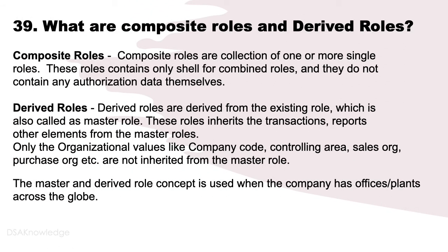What are composite roles and derived roles? Composite roles are a collection of one or more single roles. These roles contain only a shell for combined roles and do not contain any authorization data themselves. Derived roles are derived from an existing role, also called the master role. These roles inherit the transactions, reports, and other elements from the master role, but organizational values like company code, controlling area, sales org, purchase org, etc., are not inherited from the master role. The master and derived role concept is used when the company has offices or plants across the globe.